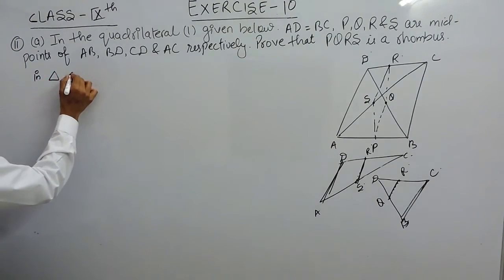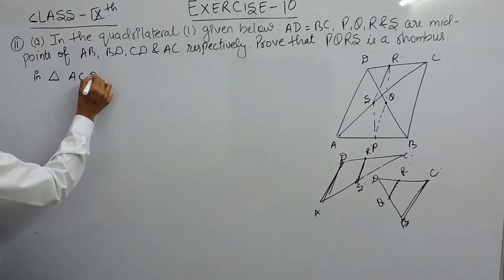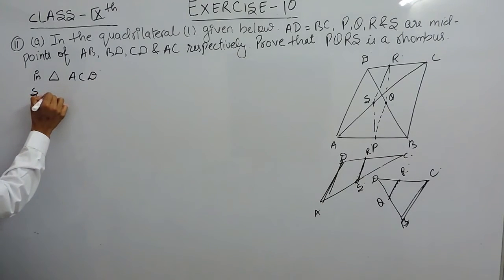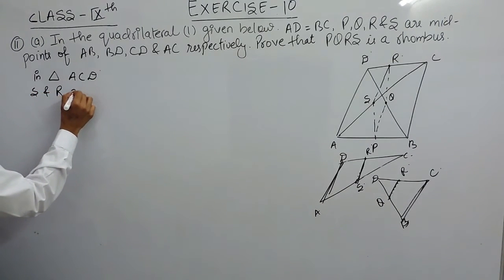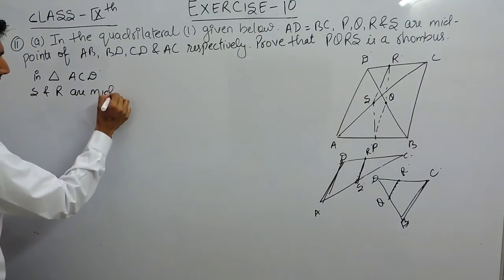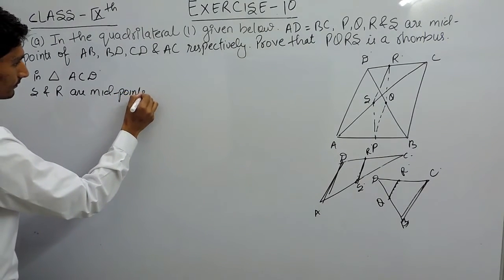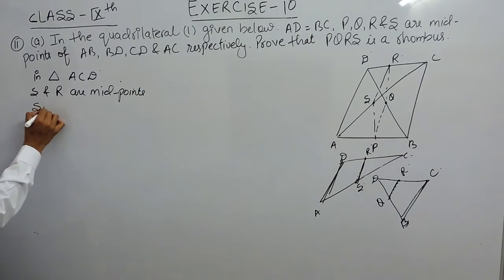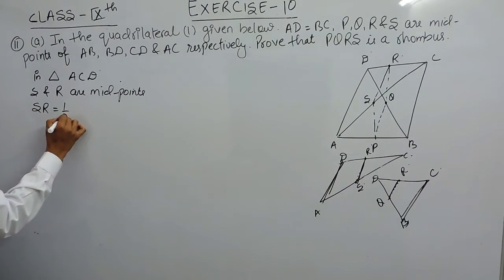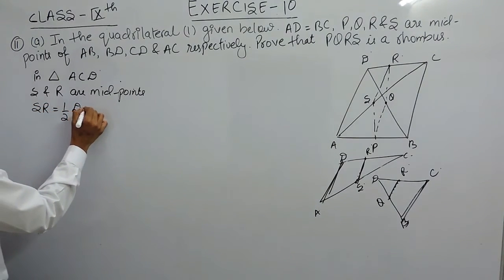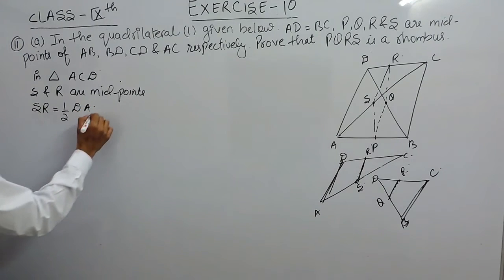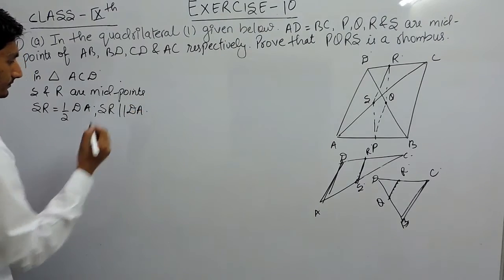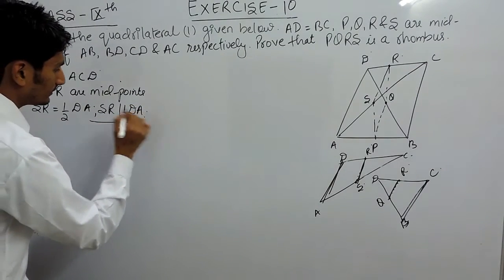In triangle ACD, S and R are the midpoints. So clearly, if I join SR, according to the midpoint theorem, SR must be equal to half of DA and SR must be parallel to DA. This is our first equation.